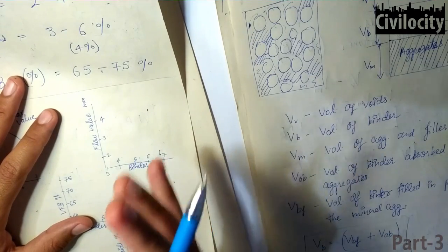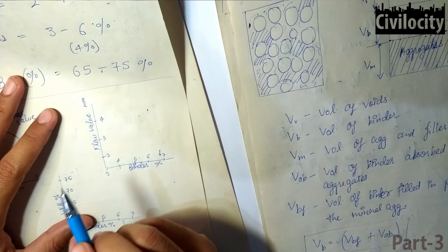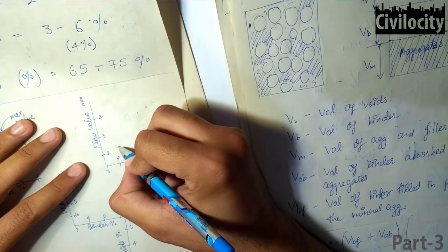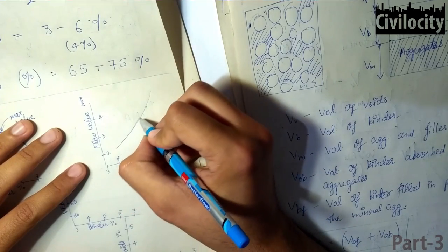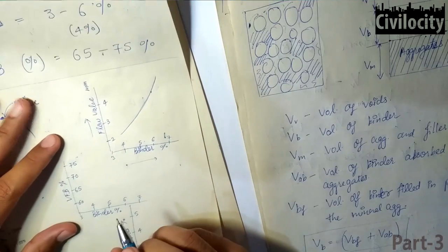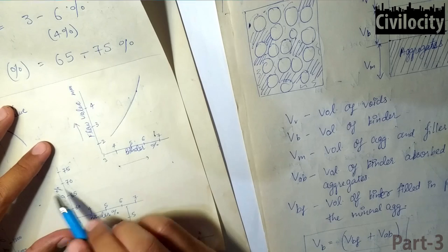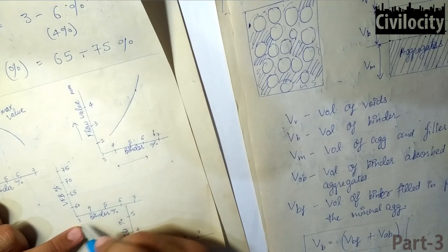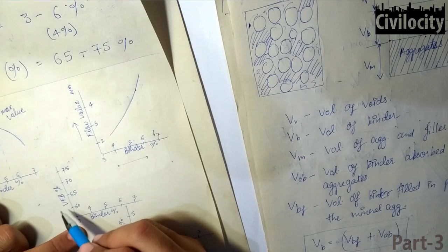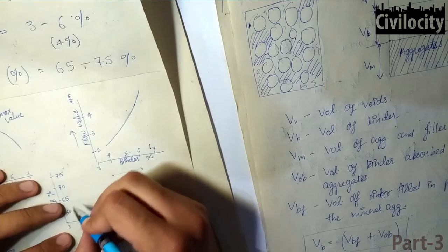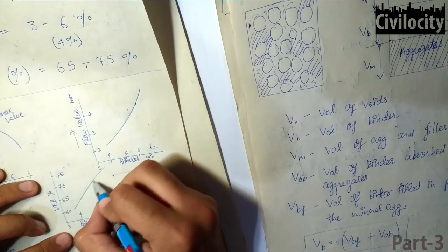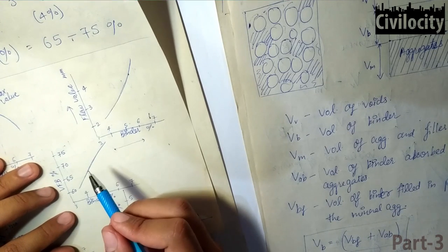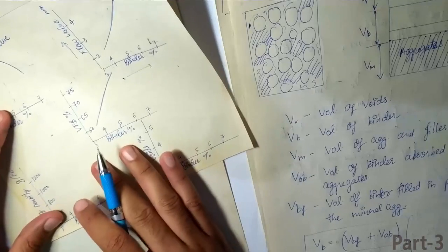Now let's talk about flow value, which is the deformation at maximum load. If we increase the binder content, the deformation values will increase — so this graph is a continuously increasing curve. Next, for voids filled with bitumen versus binder content: as we increase the binder content, more voids get filled by bitumen, giving an almost straight increasing line.